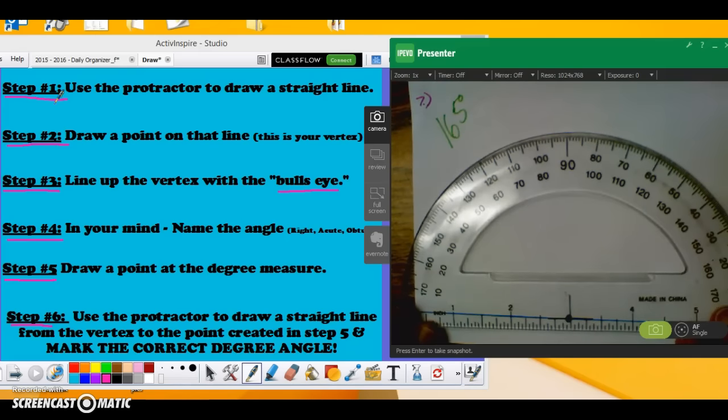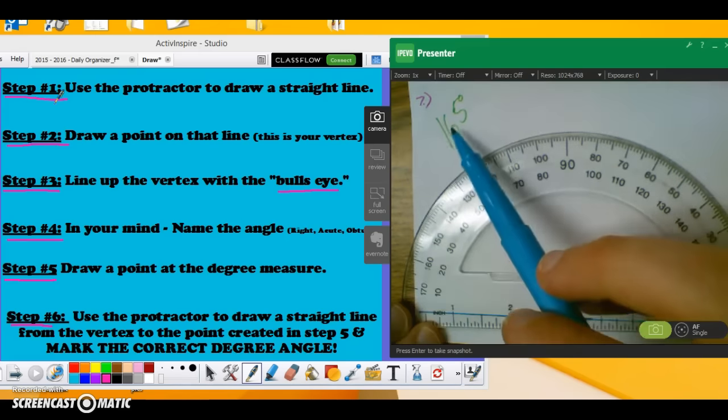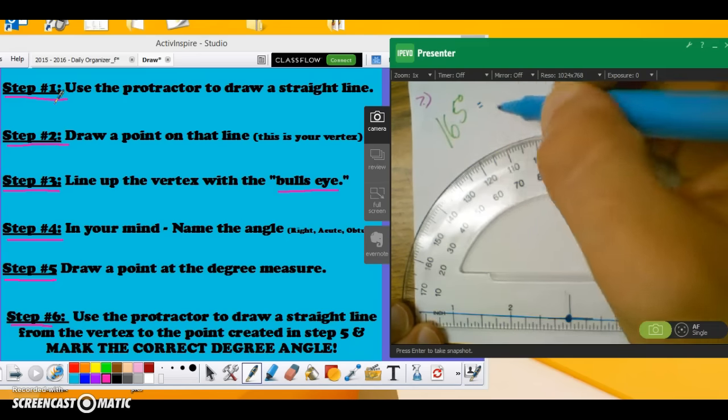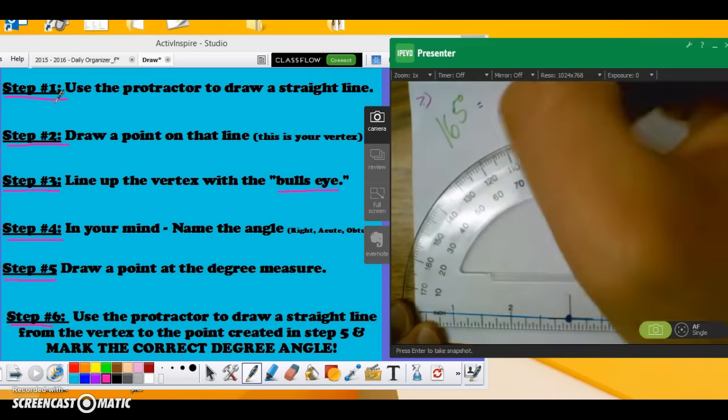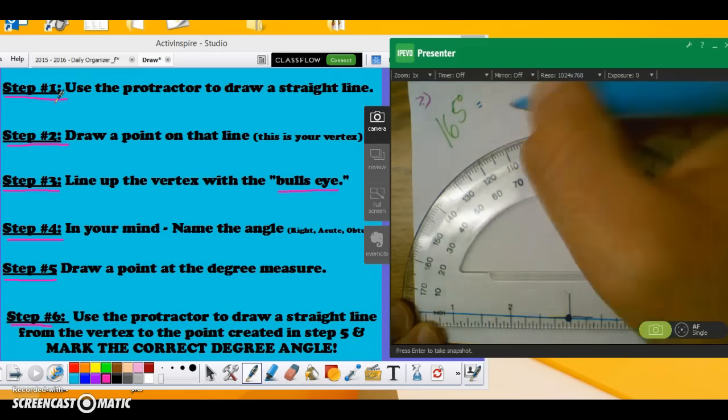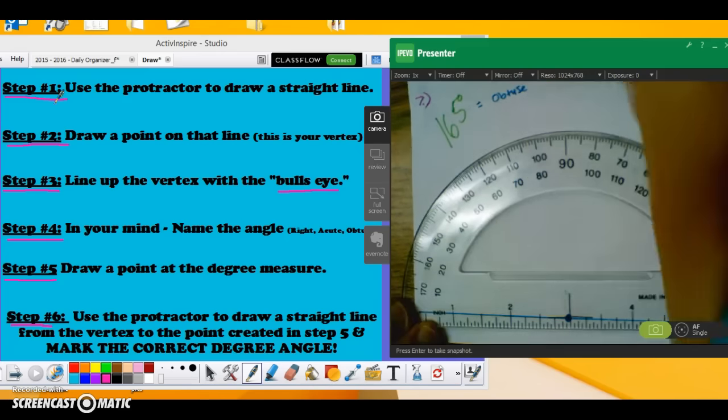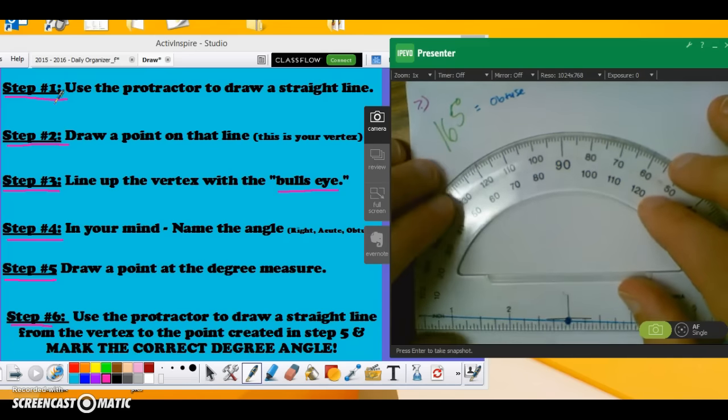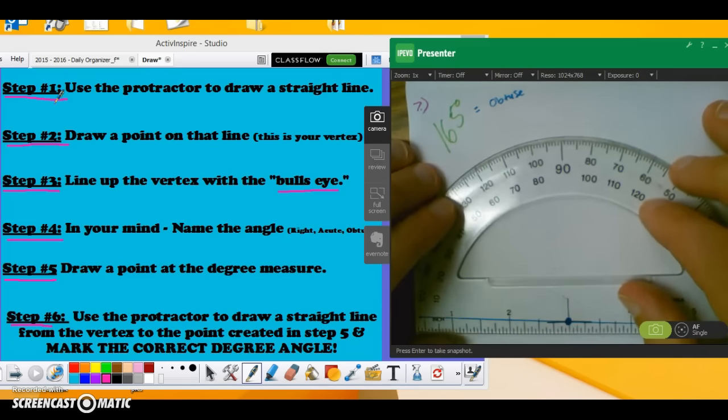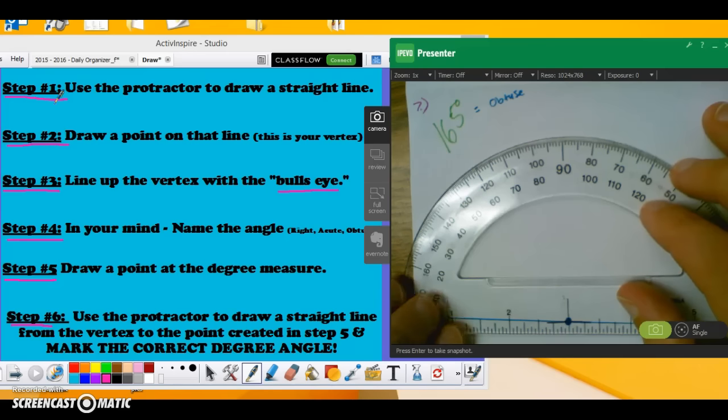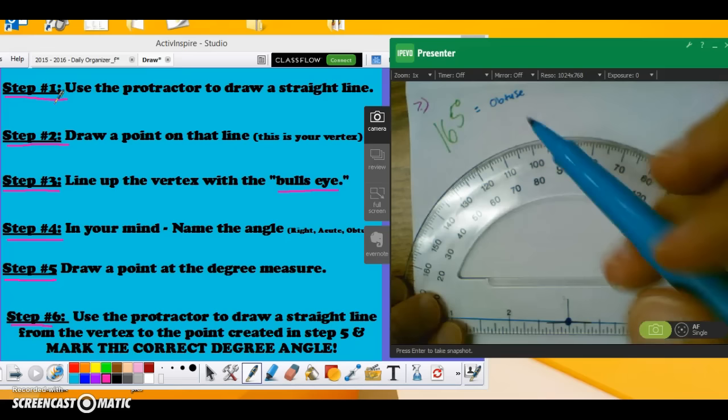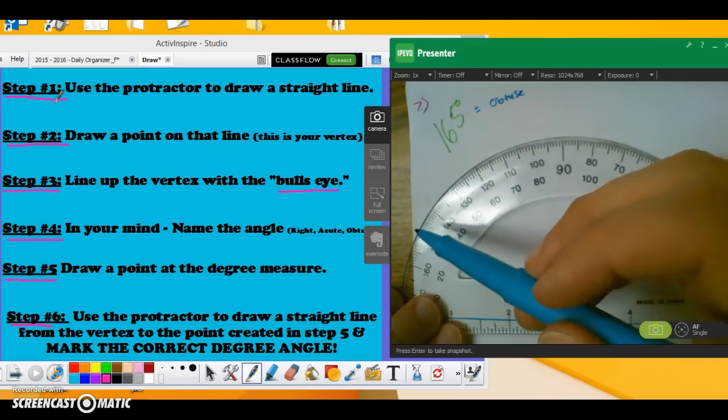Now I need to name the angle, this 165 degree angle, in my mind. Well I know anything above 90 degrees, is 165 above 90? You bet it is, is an obtuse angle. So now that I know it's an obtuse angle that will help me out once I get to step 6. But right now I'm just going to line it up with the vertex and the T marker and then I'm going to draw a point at the degree measure. Again I'm going to draw that above.